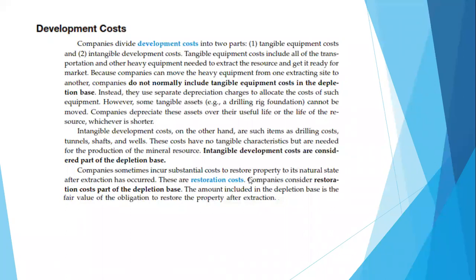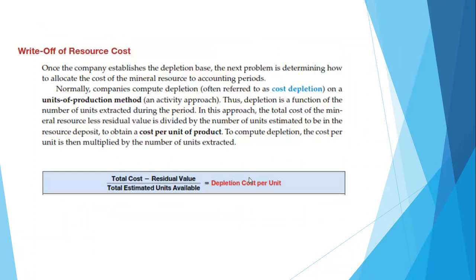Kemudian ada lagi development cost. Ini ada dua bagian: tangible dan intangible. Ini pun juga harus dihitung sebagai cost basis dari depletion. Ada juga restoration cost, jadi habis nambang itu tidak boleh sembarangan ditinggal. Ada proses restorasi, dipulihkan tanahnya. Seperti kasus Lapindo yang gagal merestorasi dan justru menjadi bencana nasional karena penambangan menghasilkan lumpur yang tidak pernah berhenti, sehingga proses restorasinya gagal. Nah ini juga harus diperkirakan. Kemudian write-off of resource cost, yaitu penghapusan dari biaya sumber daya. Caranya: total cost dikurangi residual value dibagi dengan estimated unit available.